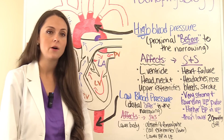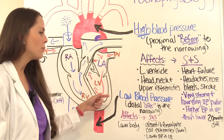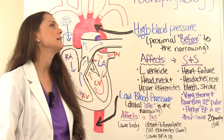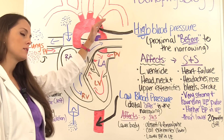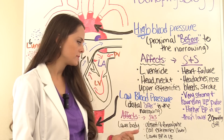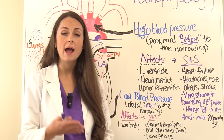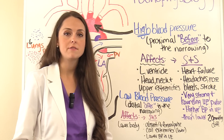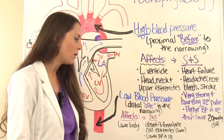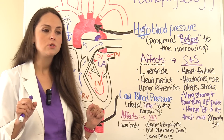Now let's talk about low blood pressure — the areas after the narrowing, distal to it — affecting the lower body. All that pressure is concentrated before the narrowing; after it, blood flow is greatly diminished. So you'll have absent or severely diminished femoral pulses, which is why you always want to check a newborn's femoral pulses after birth. The lower extremities can also feel cool to the touch, and blood pressure will be lower in the lower extremities compared to the upper.